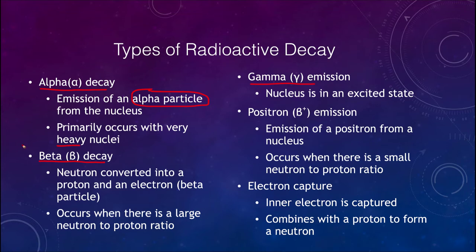Beta decay occurs when a neutron is converted into a proton and an electron. The proton remains in the nucleus and the electron, or beta particle, is expelled outward. This generally occurs when the neutron-to-proton ratio is large — there are too many neutrons — so one neutron decays into a proton, bringing the nucleus toward the band of stability.